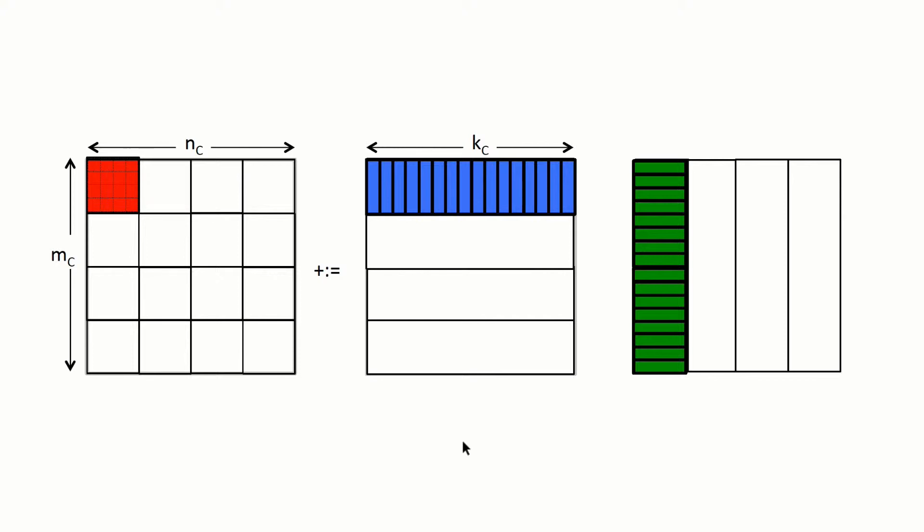So we update the first micro tile of C, and for that we need the first micro panel of A and the first micro panel of B.